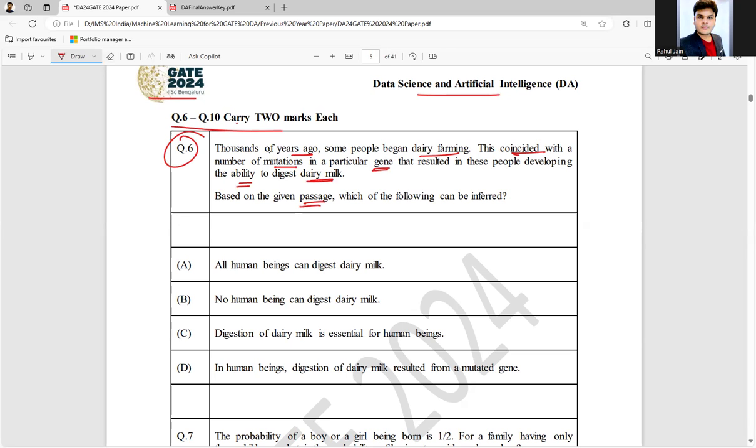Option A: All human beings can digest dairy milk. Can we say like that? Thousands of years ago, some people began dairy farming. This coincided with a number of mutations in a particular gene that resulted in these people developing the ability to digest milk. These people, some people, not all.